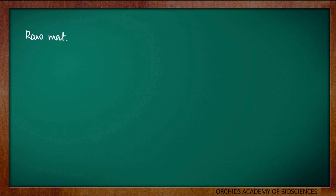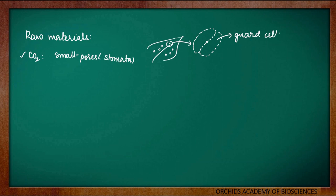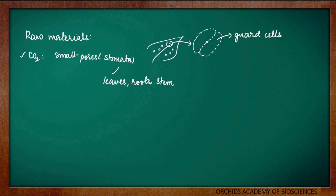Now, let us discuss the raw materials. The first raw material is carbon dioxide. Carbon dioxide is taken in from the air through some small pores present on the leaves which are called as stomata. If we take a leaf and look at it, there will be numerous small pores present on them. If we try to zoom in or magnify a small pore, we will see two cells attached to these pores. These cells will be guarding the stomata and hence they are called as the guard cells. The stomata are not only present on the leaves but are also present on the roots as well as the stem of the plant. So, it is not only the site of entry of carbon dioxide but can also be a site for the loss of water from the plants. When there is no need for carbon dioxide for the plants, they have to close the stomata so that there is no loss of water.